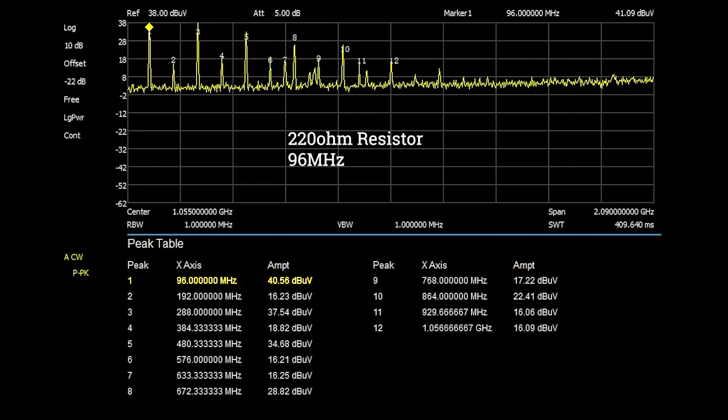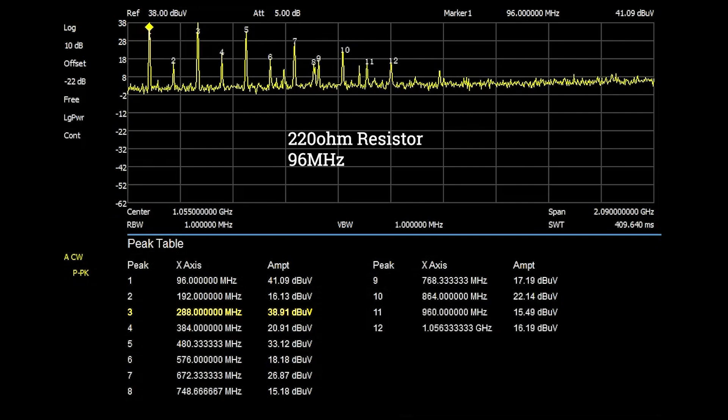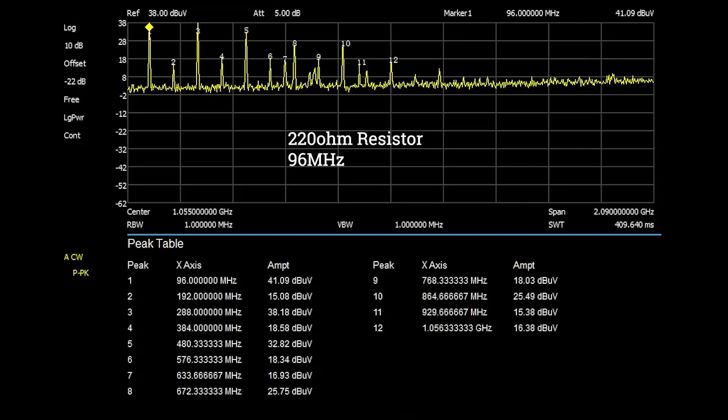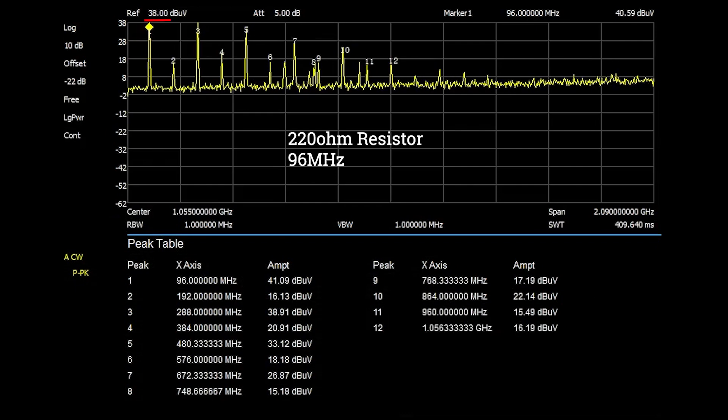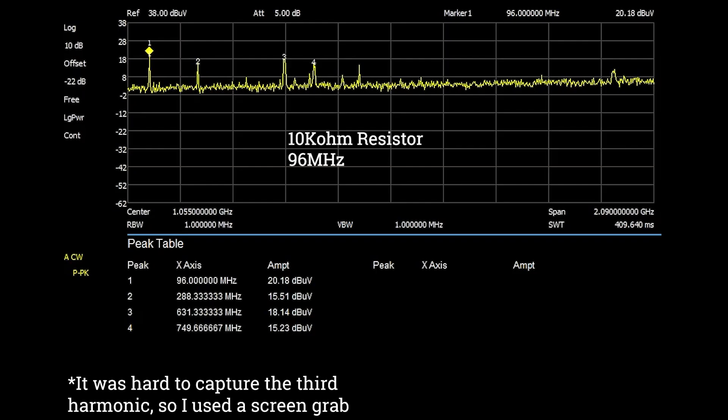Switching to a 220 ohm series resistor the 96 megahertz fundamental frequency has a power of 41 dB µV. The third harmonic is 37 dB µV, fifth harmonic is 34 dB µV, and ninth harmonic is 22 dB µV. Here the fundamental frequency has basically the same power as with the zero ohm but after that the power starts to roll off linearly. The final resistor value is a 10k which of course is not super realistic but I chose it still to show a really dramatic difference. The fundamental is 20 dB µV, third harmonic 15 dB µV. After this the power rolls off below the peak table limit.